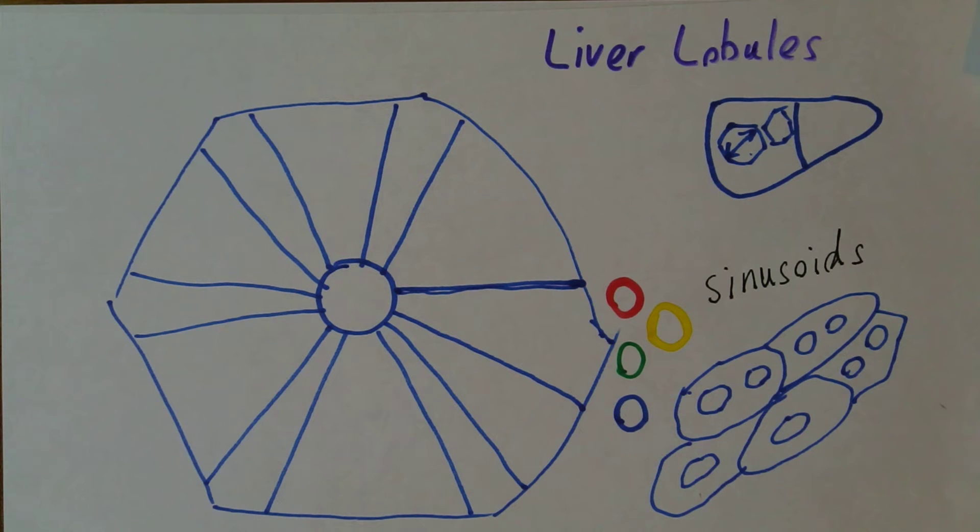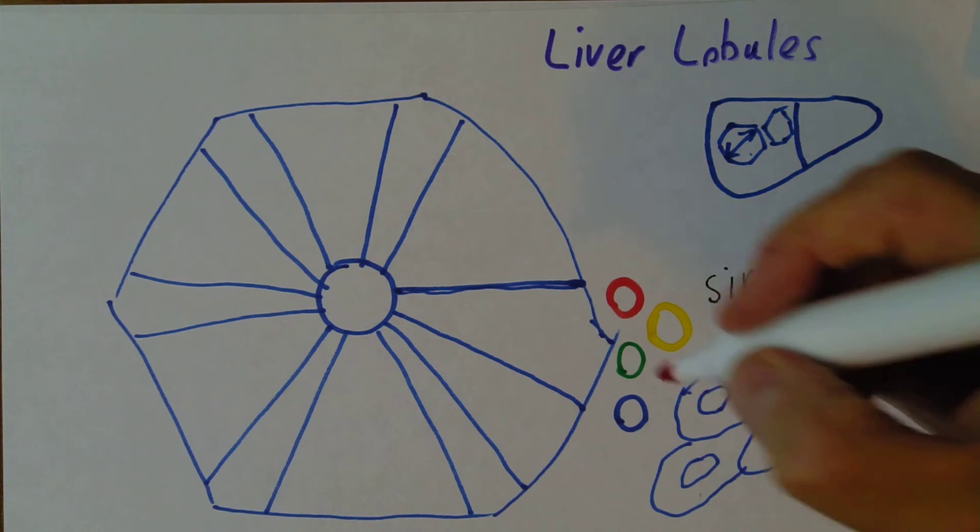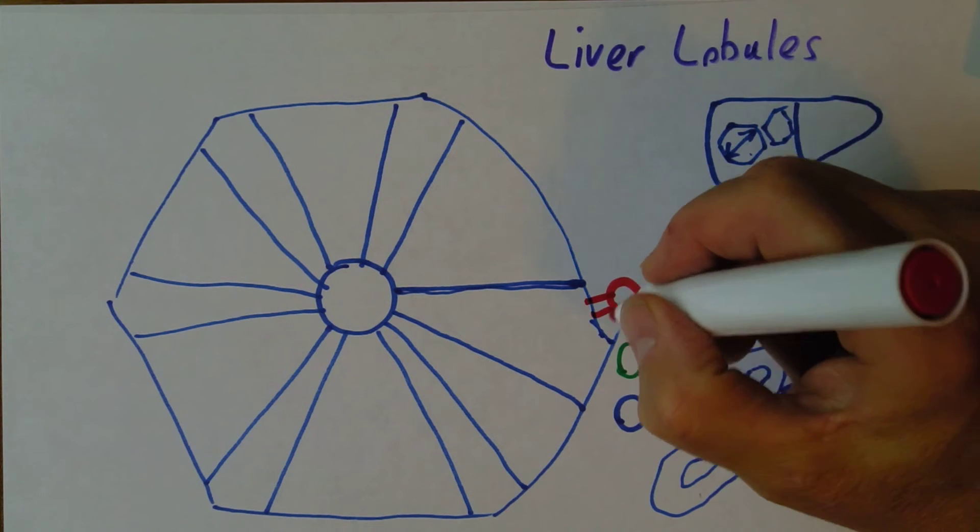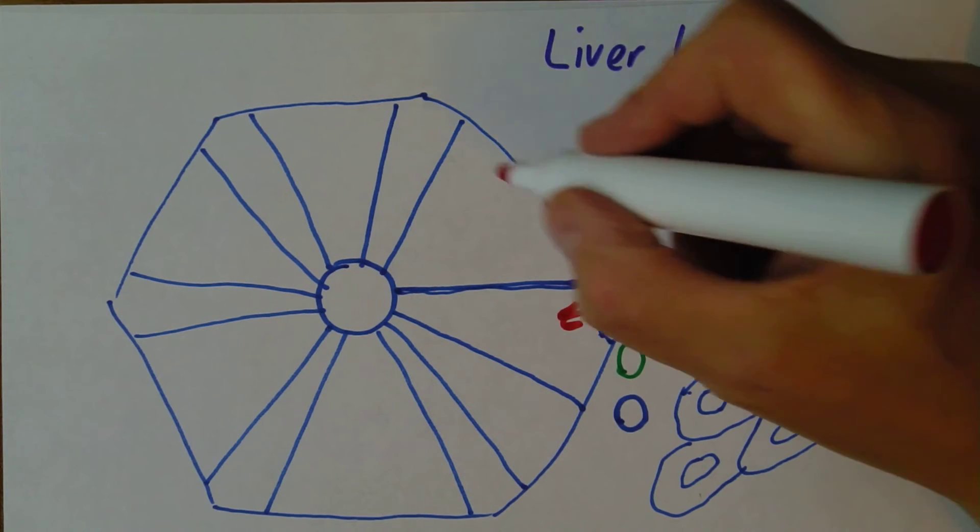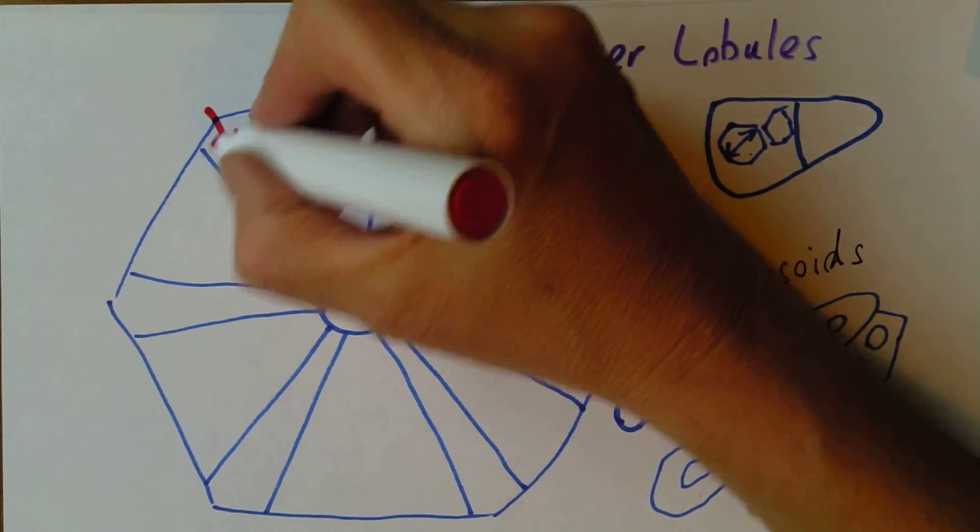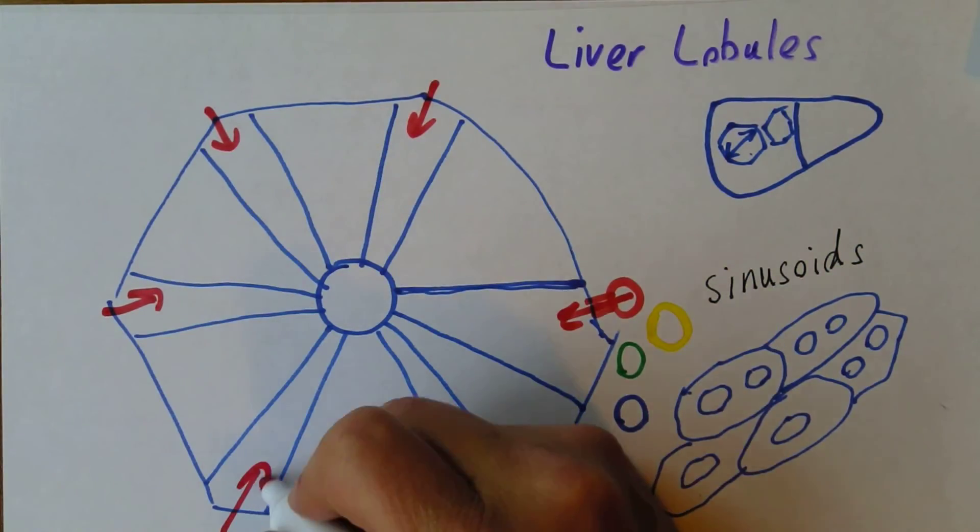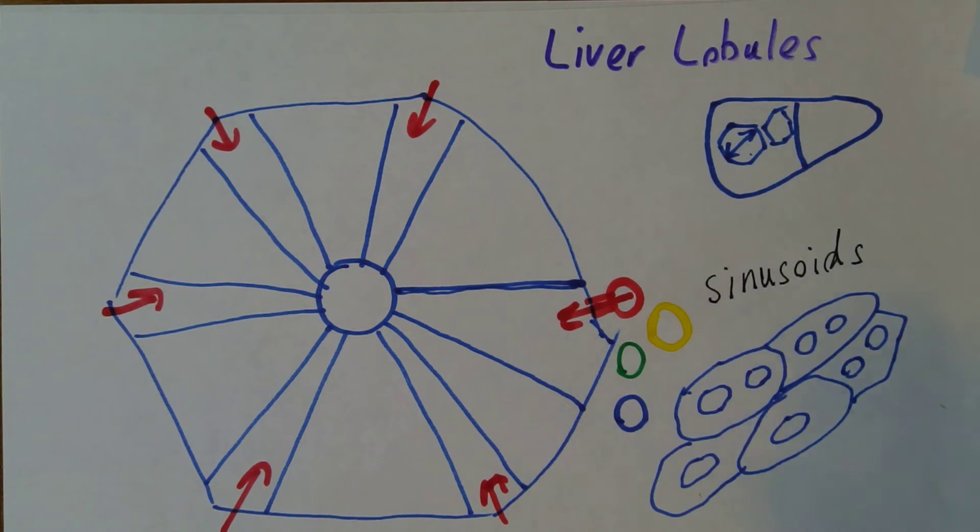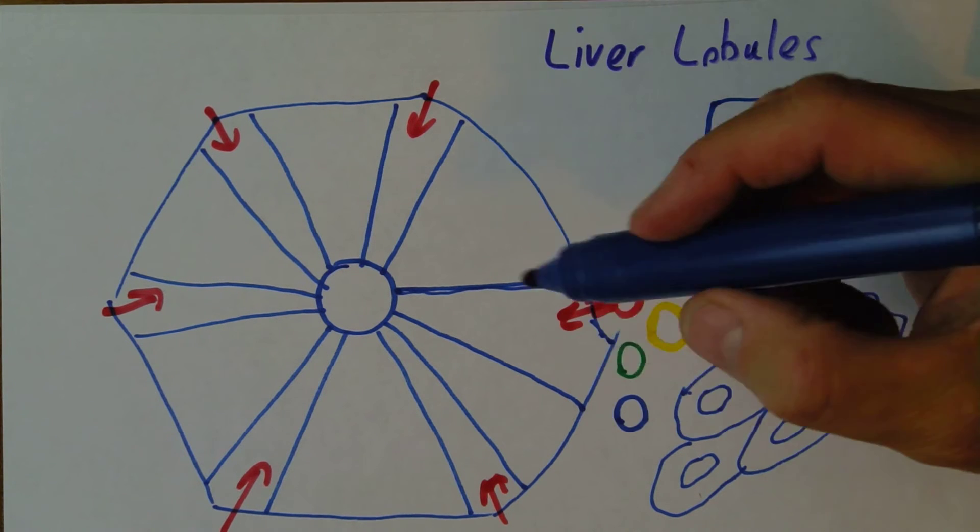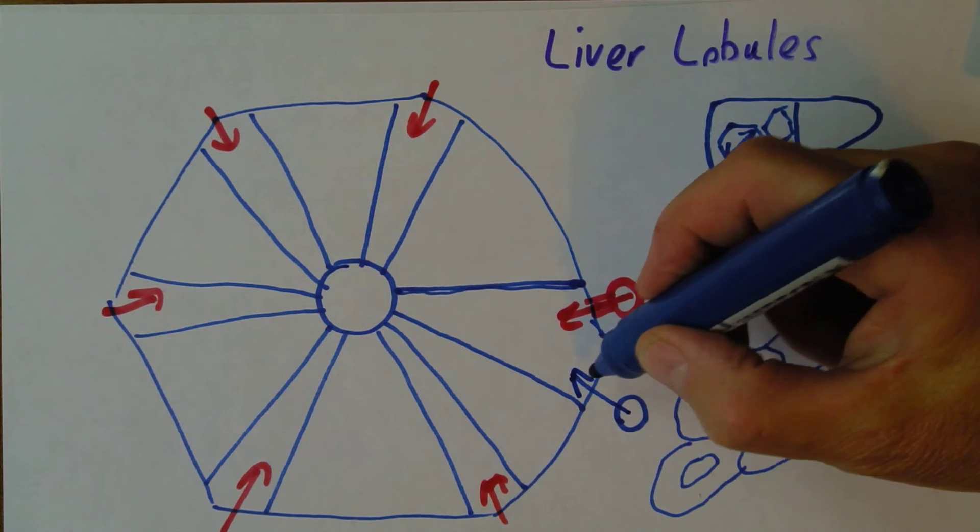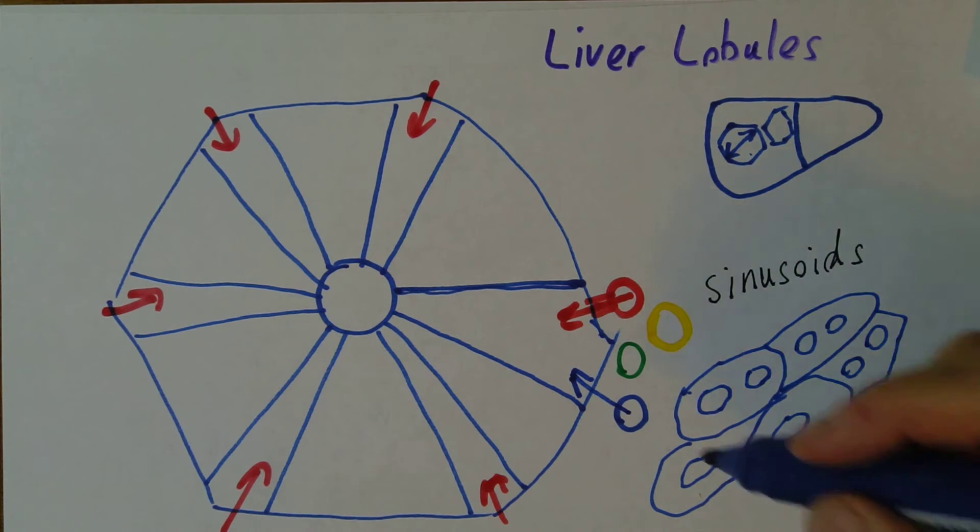So the blood is going to go from - there's going to be a channel there - from the hepatic artery into the sinusoid. It will be the same from the channels there and from there. It's going to be flowing into these sinusoids from the hepatic artery, 30% of the blood supply. Also there's going to be blood from the hepatic portal vein, 70% of the blood. And that blood is going to mix in the sinusoids.